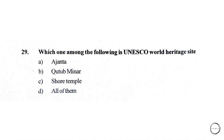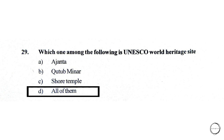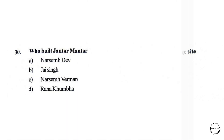Next, which one among the following is a UNESCO World Heritage Site? A) Ajanta, B) Qutub Minar, C) Shore Temple, D) all of them. The right answer is option D, all of them.